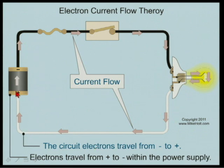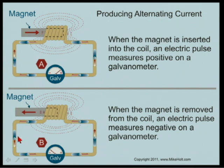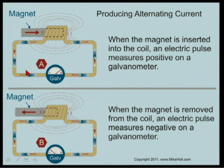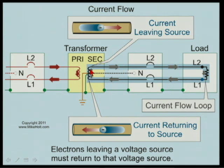Alternating current works off this principle: if you move a magnetic field through a conductor, it causes electrons to move in a closed circuit. Move it one direction and current goes right; move it the other direction and current goes the other way. But whether you're running a DC circuit or an AC circuit, the fundamental is the same. For example, a transformer has a primary where current leaves and returns to the source, creating magnetic coupling that forces electrons on the secondary to also leave and return to the source.